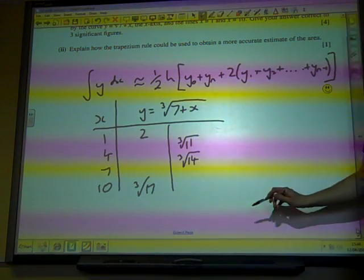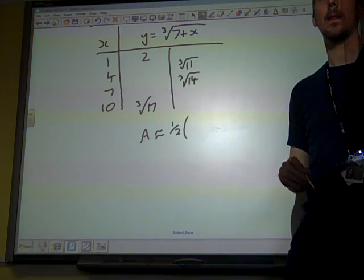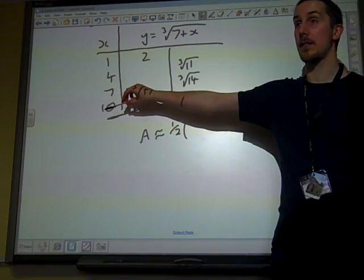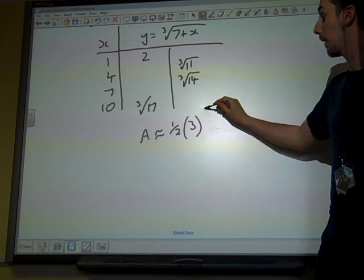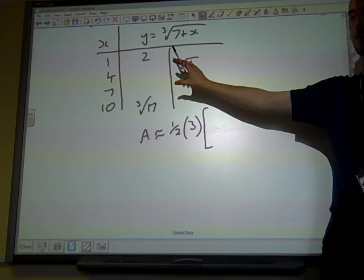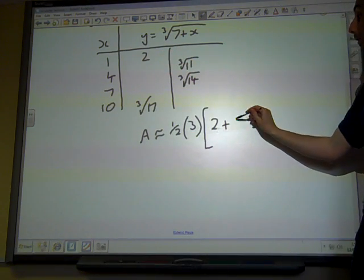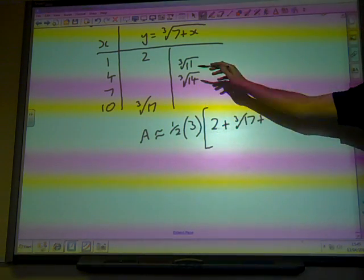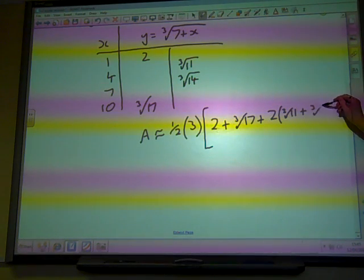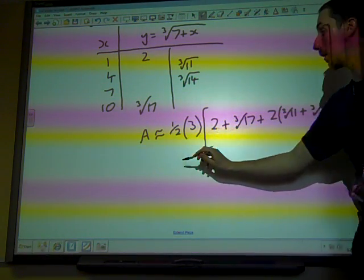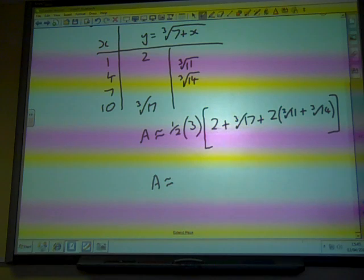And now it's just a case of feeding those into the formula. So the area is a half, h is the step size, so the difference between each of these values, so that's 3. And then the reason for doing a table like this is that we're going to put in the first plus the last - they go on their own - plus twice the other values. And then we go straight to the calculator.